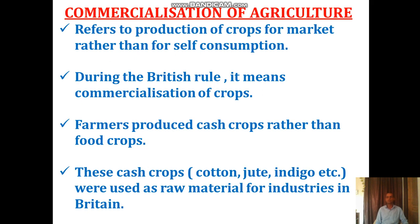The farmer produced cash crops rather than food crops. Wheat and rice are examples of food crops, while cash crops include cotton, jute, and indigo. These cash crops were used as raw material for industries in Britain. So commercialization of crops happened during the colonial period — farmers were under pressure to produce cash crops rather than food crops like wheat and rice, even though these food crops were not available for the farmers' own families.